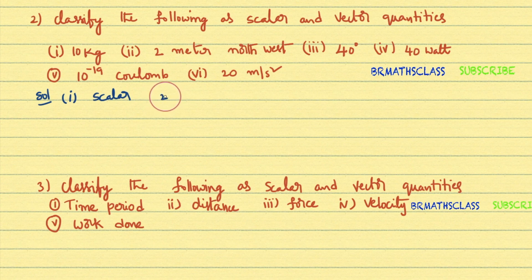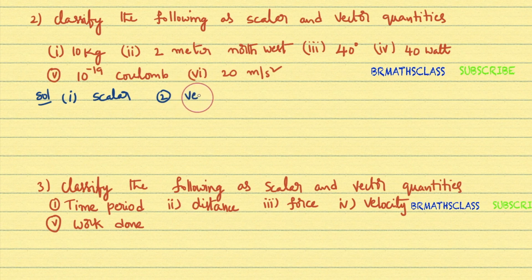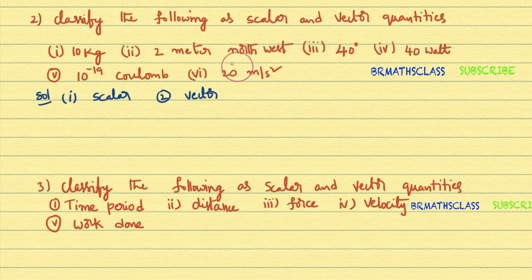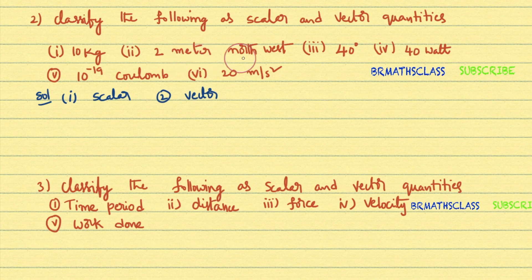Second bit: 2 meters north west. Magnitude is given and direction is also given, so 2 meters north west is a vector quantity. Scalar means a physical quantity having only magnitude but no direction. Vector means a physical quantity having both magnitude and direction. 10 kg is just magnitude with no direction, so it's a scalar. 2 meters north west has magnitude and direction, so it's a vector.